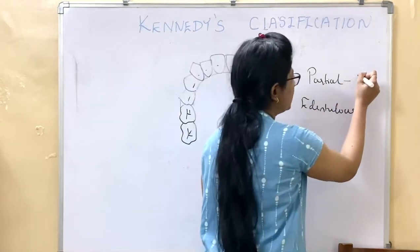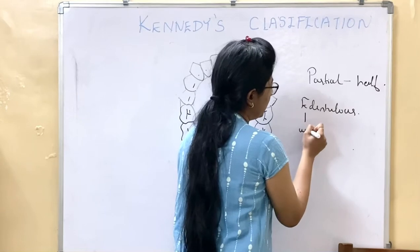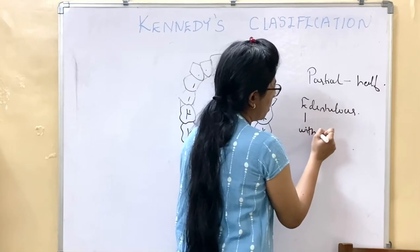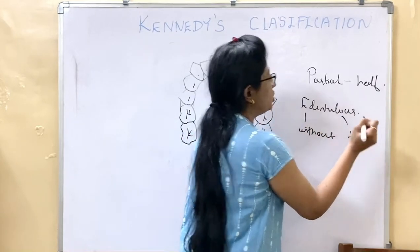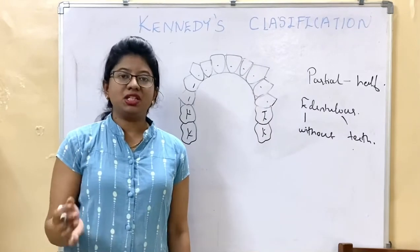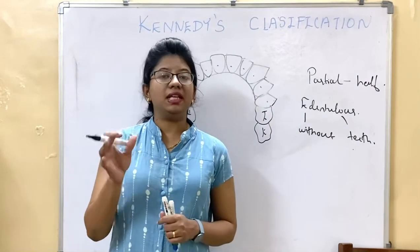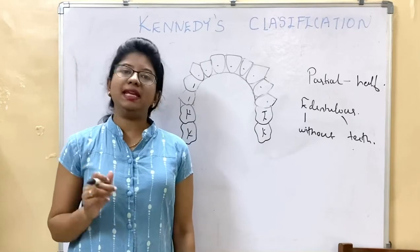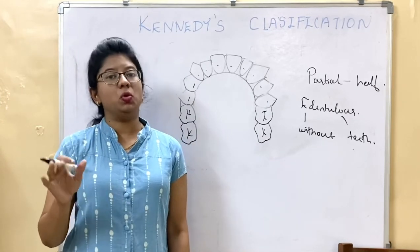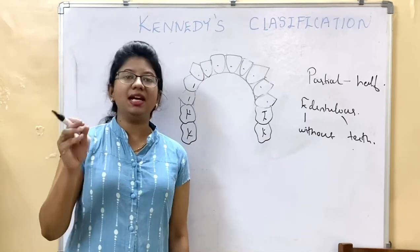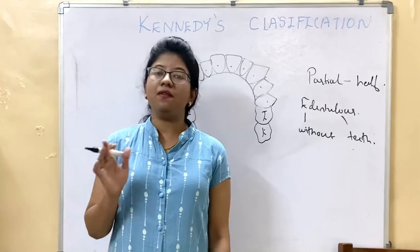Partial means half. Edentulous means without teeth — 'E' means without and 'dentulous' means teeth. It is used to classify arches which are partially without teeth. He has given four main classifications: Class 1, Class 2, Class 3, and Class 4. We will see each classification one by one.